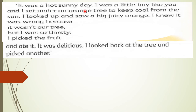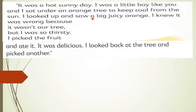Let's read together. 'It was a hot sunny day' — كان يوم مشمس حار. Here 'I' refers to Yatin, because Yatin is the one telling his story. 'I was a little boy like you' — كنت ولداً صغيراً مثلك — like his grandson. 'And I sat under an orange tree to keep cool from the sun' — حتى أبقى بارداً من الشمس. 'Keep cool' means أبقى بارداً.